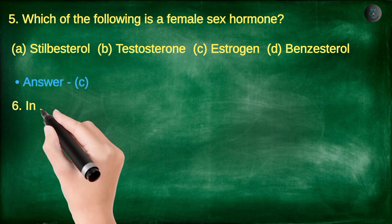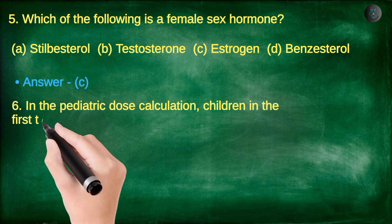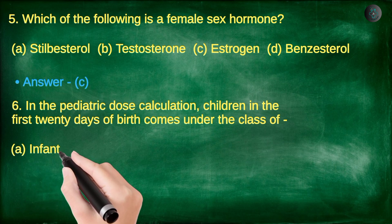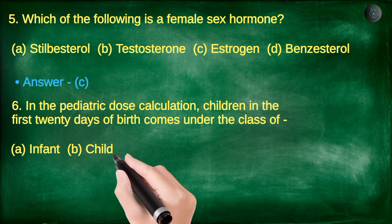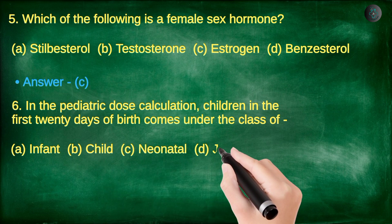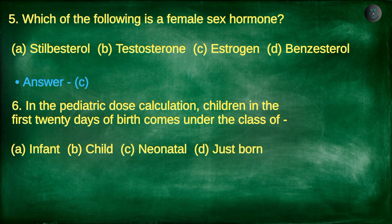Next question. In the pediatric dose calculation, children in the first 20 days of birth come under the class of: A. Infant, B. Child, C. Neonatal, D. Just born.